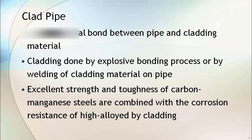Clad pipe has a metallurgical bonding between the pipe and the cladding material, as against the mechanical bonding between the pipe and lining material in a lined pipe. Cladding is done by an explosive bonding process or by welding of cladding material onto the pipe.